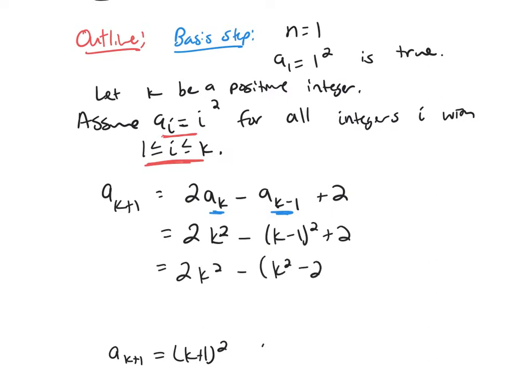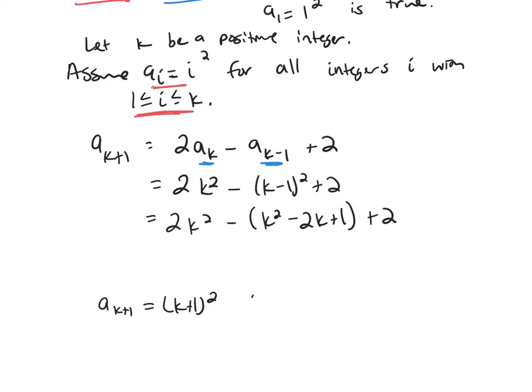This is k² - 2k + 1 + 2. And then if you group up your like terms, you'll get k² + 2k + 1, which is the same thing as (k+1)², which is what we needed to get to.